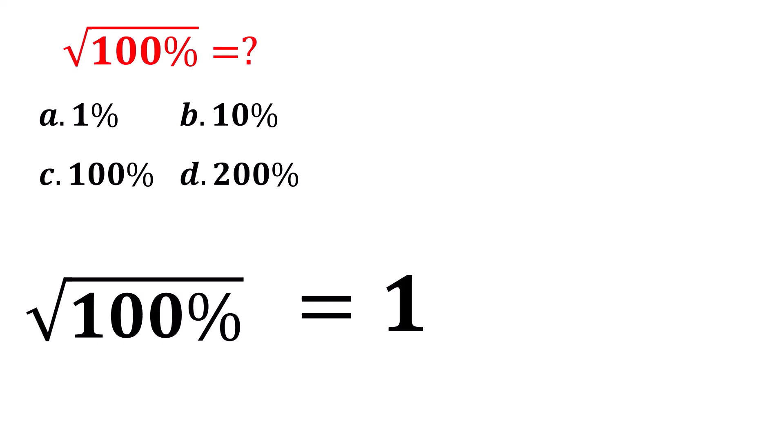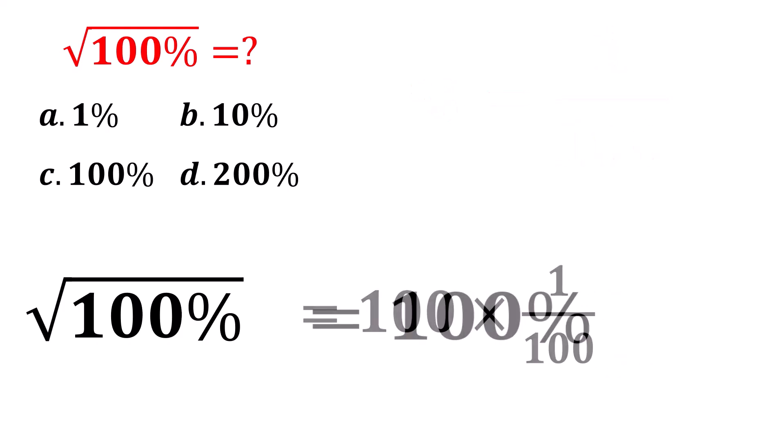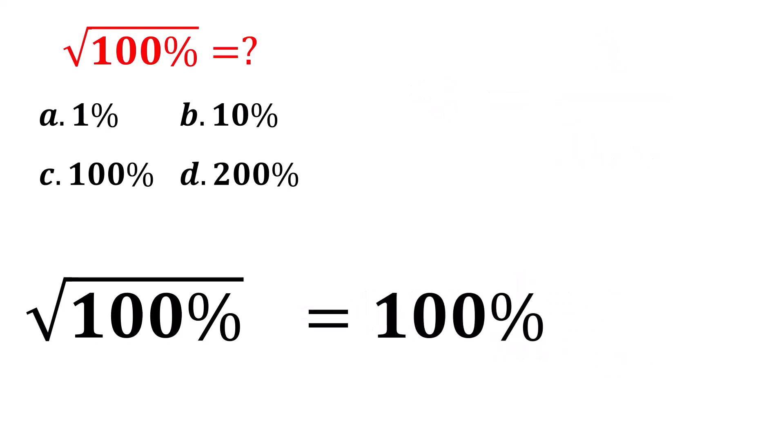Now, 1 can also be written as 100 over 100. That becomes 100 multiplied by 1 over 100. Again, since 1 over 100 means percent, we can write our expression as 100%. So, option C is the correct answer.